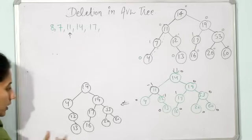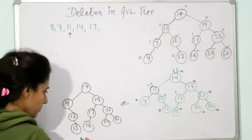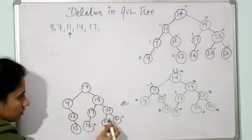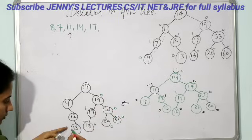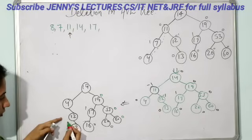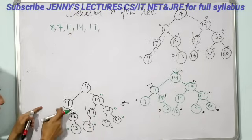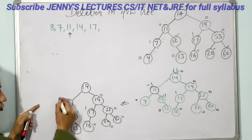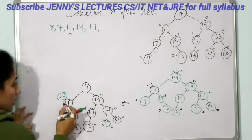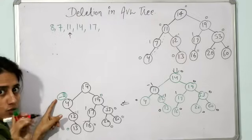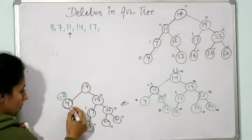Now check out the balance factor of every node. Balance factor of 12 is 0 minus 1 = minus 1. Balance factor of 4 is: height of left subtree is 0, height of right subtree is 2, so 0 minus 2 = minus 2. This minus 2 is not within the range minus 1, 0, and 1 — so this node is the critical node and you have to balance it out.